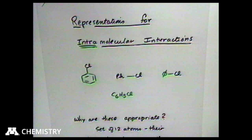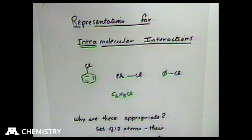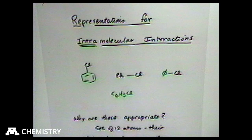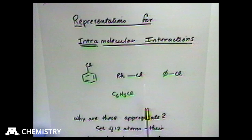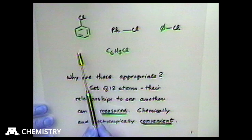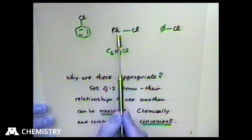I'm going to start by talking about representations that we as organic chemists use daily and why we use them — representations of molecules. We have different ways of showing intramolecular interactions, drawing pictures. These little pictures of chlorobenzene are just representations. The question is: why are these appropriate representations? Part of the answer is that what we're showing are the connectivity patterns of atoms.